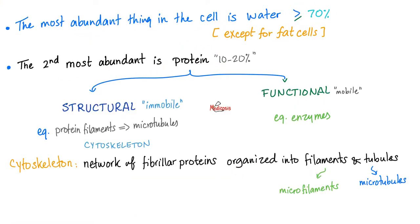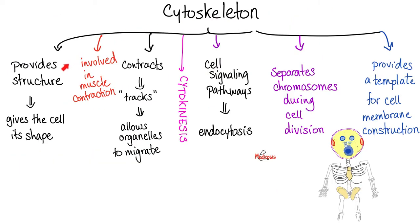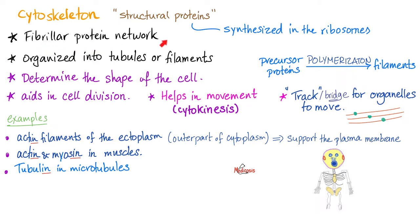The most abundant thing in your body is water. The second most abundant is proteins. Proteins are everywhere, for structure and for function. Remember when we talked about the enzymes? Yeah, these are functional proteins. How about the microtubules? Most of the time, they are structural. So your cytoskeleton is made of gazillion things, including proteins. Structural proteins, that is. Cytoskeleton is a set of fibrillar protein networks, organized into tubules and filaments. Since they are microscopic, we call them microtubules and microfilaments.